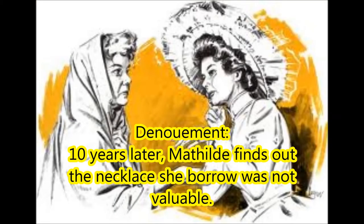The resolution of the story is that 10 years later, Mathilde finds out that the necklace she borrowed was not actually valuable, after meeting her old friend. This is a cause for a very ironic ending, because she spent all these years paying back for a necklace she thought was valuable, only to find out that all those years were for nothing.